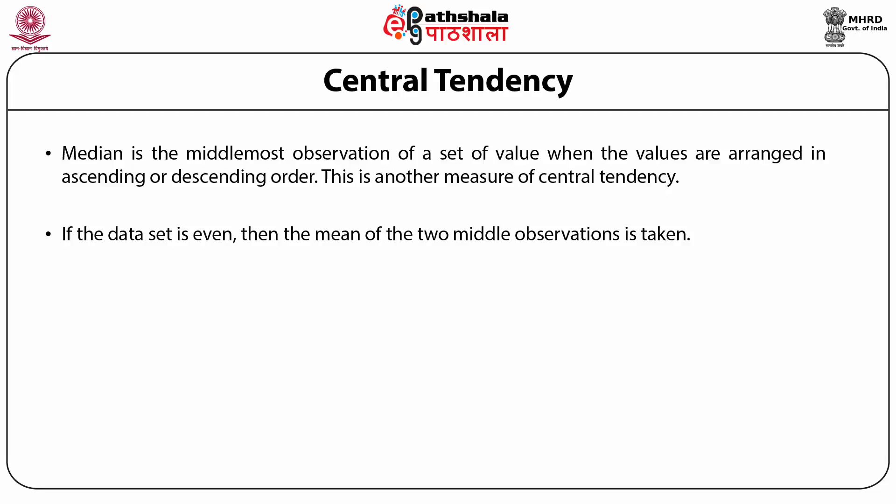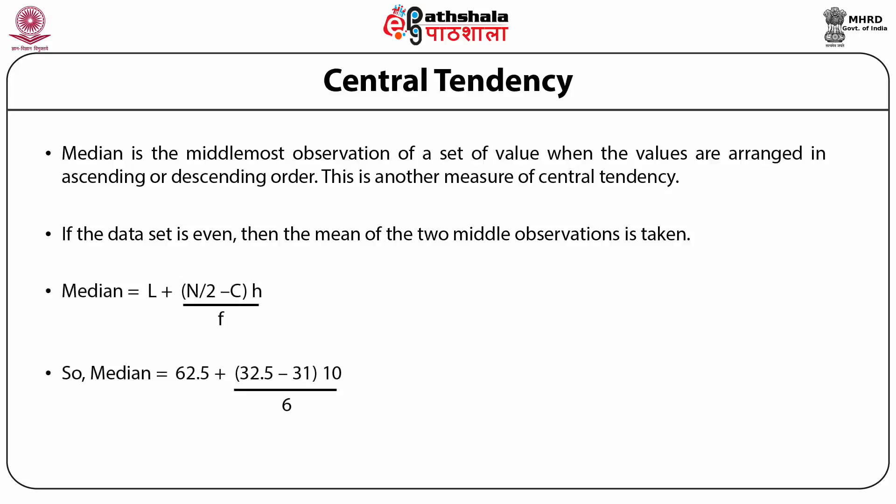In case of grouped data, we apply the formula: Median = L + [(N/2 − C) / F] × H, where L is the lower limit boundary of the median class, F is the frequency of the median class, H is the width of the median class, C is the cumulative frequency of the class preceding the median class, and N is the total number of observations. As shown for the weight of a particular group of observations, the calculation of median using this formula comes out to be 65.0.